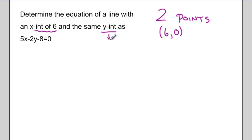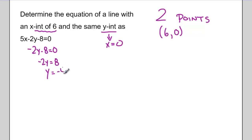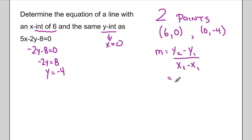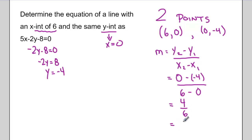If I'm looking for the same y-intercept, I'm looking for where x equals 0 in this equation. Subbing 0 in for x cancels that first term out, which leaves me with negative 2y minus 8 equals 0, or negative 2y equals positive 8. Dividing, 8 divided by negative 2 is negative 4, so my second point is (0, -4). I find the slope between these two points using y2 minus y1 over x2 minus x1, taking 0 subtract negative 4 over 6 subtract 0, which gives me a slope of 4 sixths or 2 thirds.